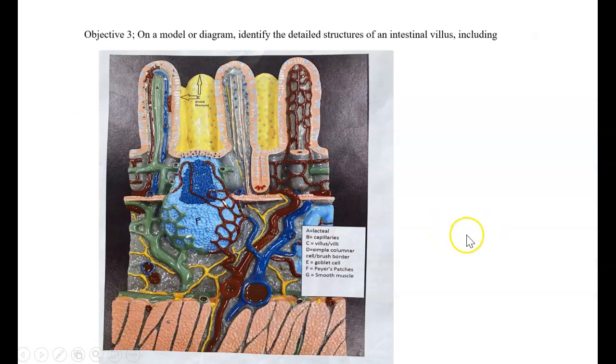Here is objective three, identifying the detailed structures of an intestinal villus. So, again, A, which is this green part here, this is the lacteal, the middle part of the villi. And this is going to be where fat is going to get absorbed and then eventually taken and put into the lymph system. B is the capillaries that are going to exist within the villi right around here. It kind of surrounds the lacteal structure. C is referring to the entire structure here, which is the villus or the villi.